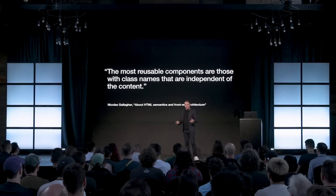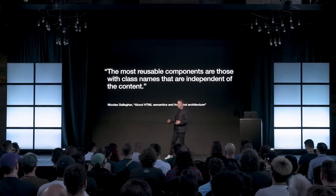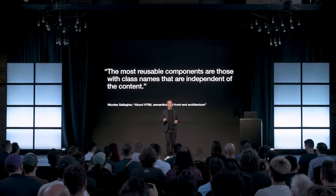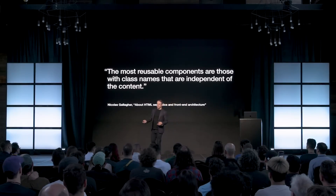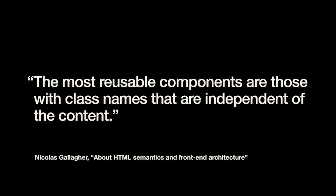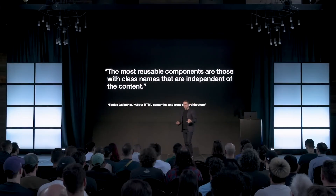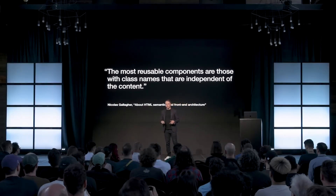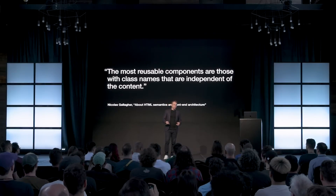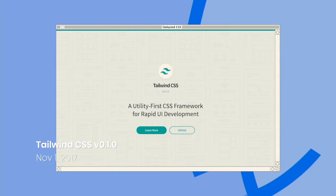The words written by Nicholas Gallagher had a big influence on him. Adam stumbled upon Gallagher's article — called "About HTML semantics and front-end architecture" — where Gallagher, the creator of Normalize CSS, makes the argument that the most reusable components are those with class names that are independent of the content. Adam took this idea as the foundation and a few years later released the first version of Tailwind CSS, version 0.1.0.